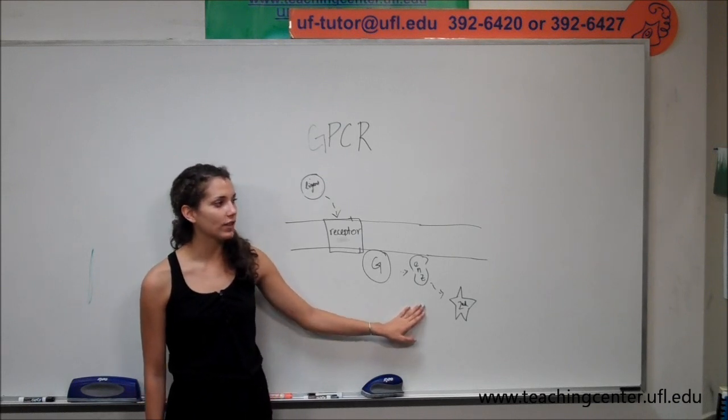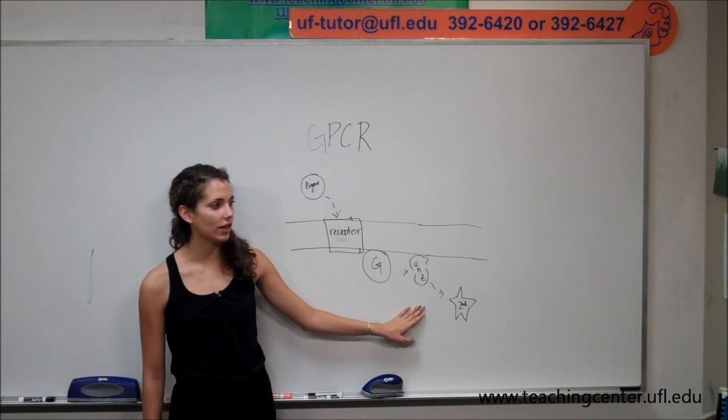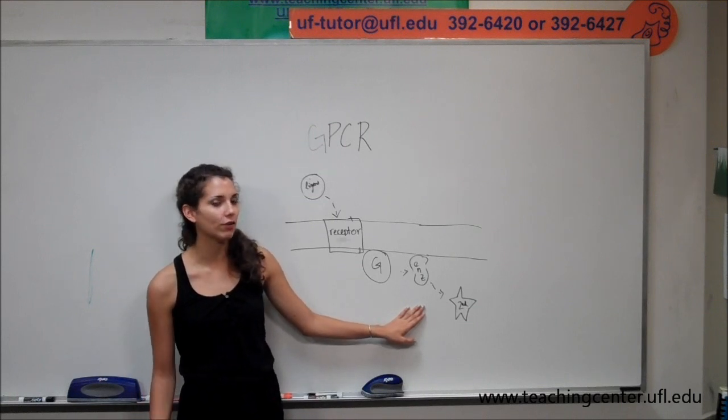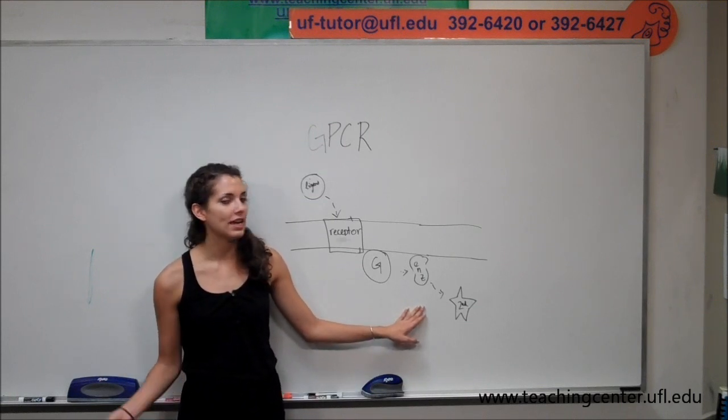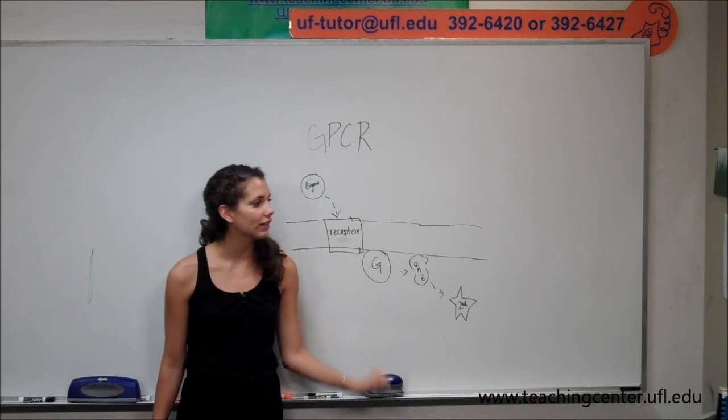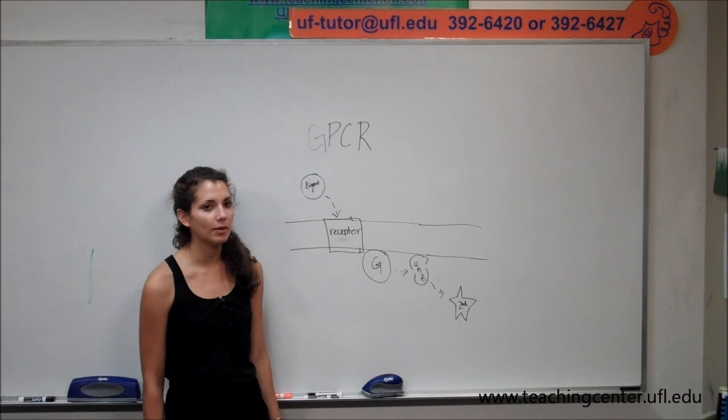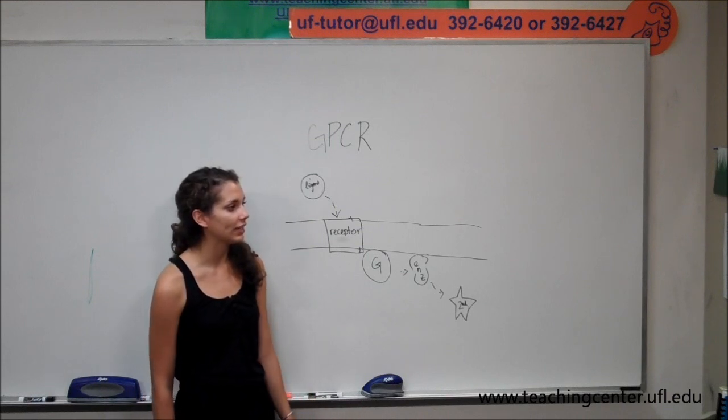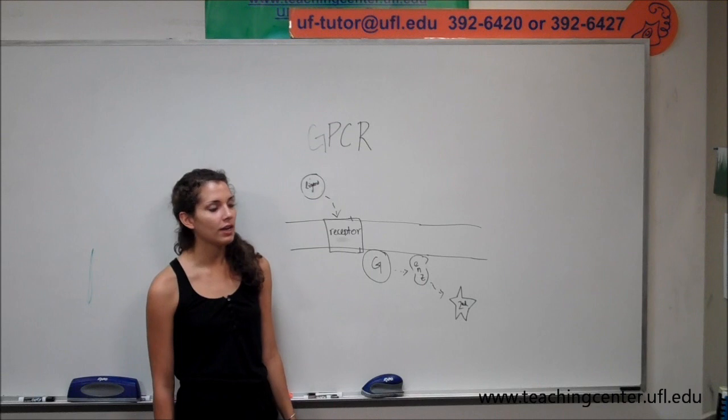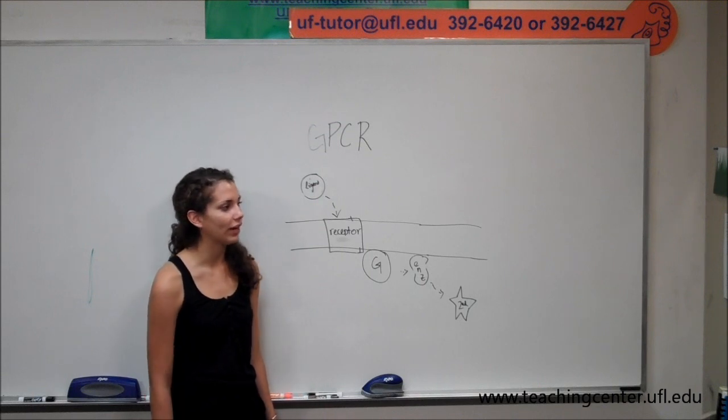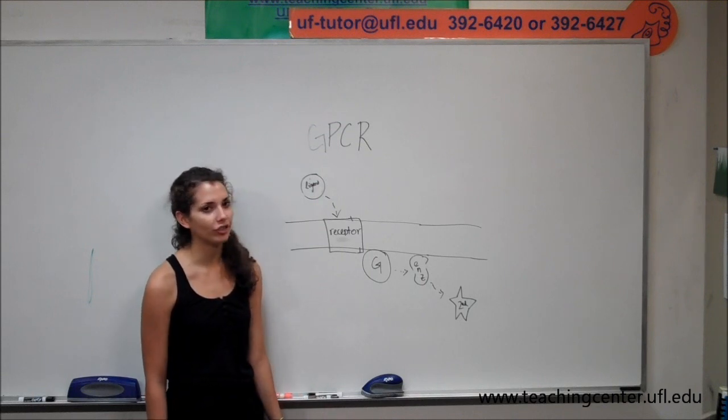Phospholipase C cleaves phosphatidyl inositol-4,5-bisphosphate. If you remember this from your first exam, it's a common phospholipid found in lipid bilayers. This is hydrolyzed by phospholipase C into inositol triphosphate, or IP3 for short, and diacylglycerol, or DAG.